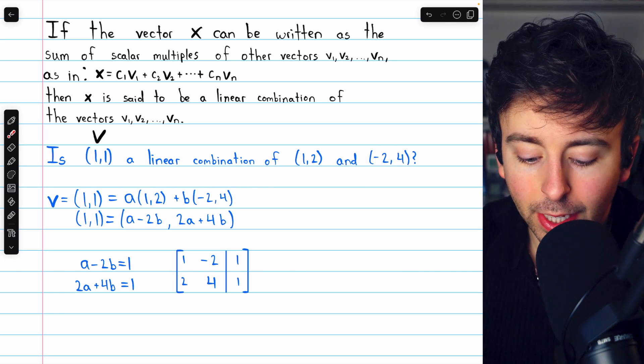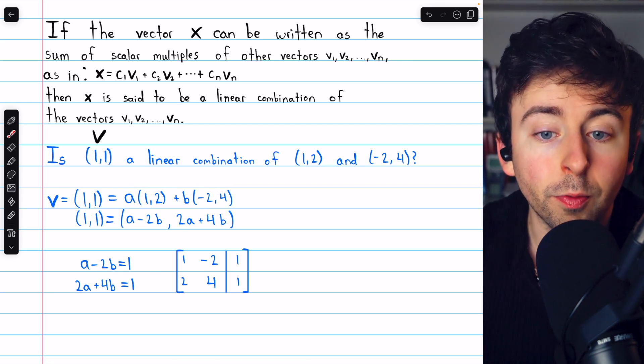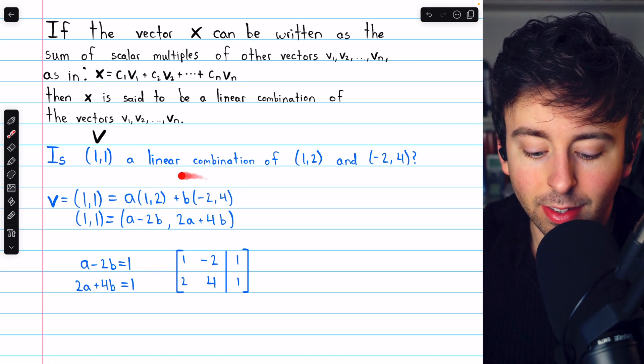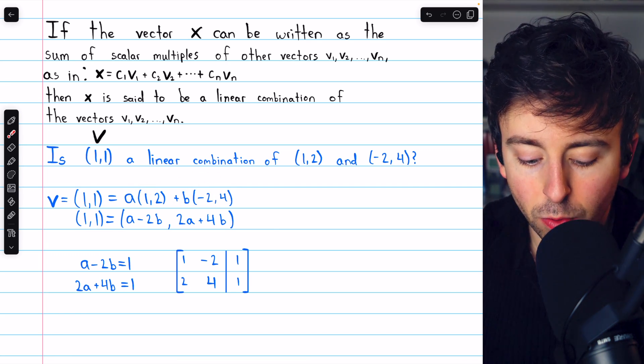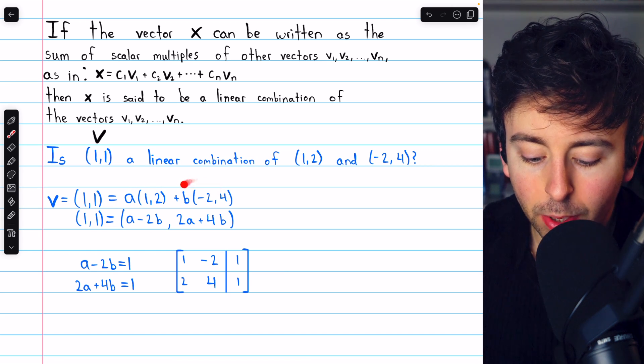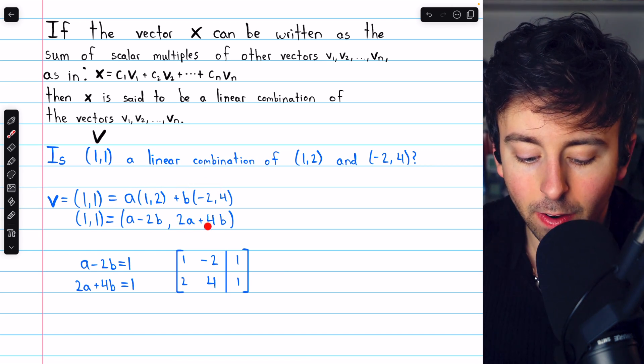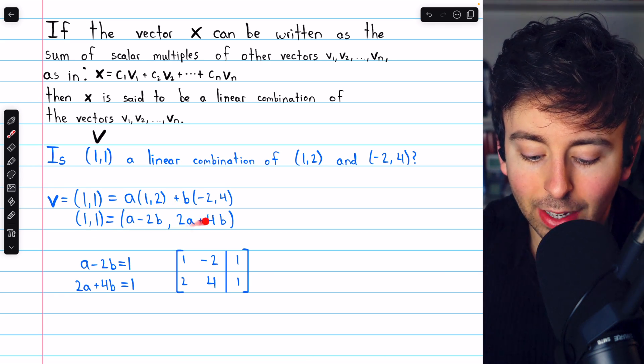Performing the scalar multiplication on the right and performing the vector addition, the first component of this sum on the right is a - 2b, which we see there. And the second component is 2a + 4b, which we see there. So it must be the case that the vector (1,1) equals this vector here.